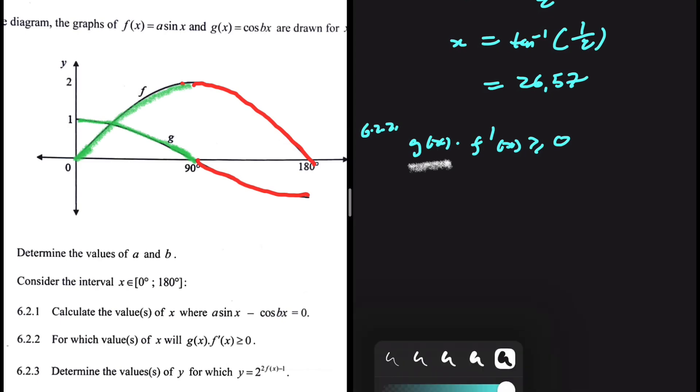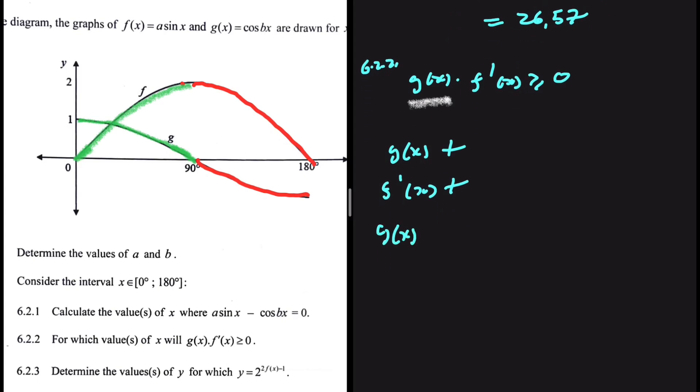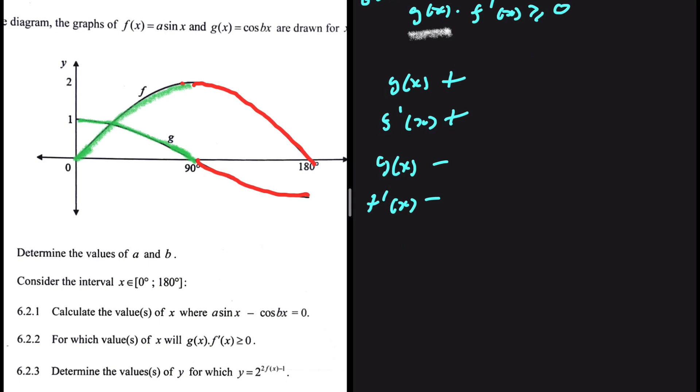So as you can see, when g of x is positive, f prime of x is also positive. The product of those two graphs will be positive. And when g of x is negative, the gradient of f of x is also negative. Negative multiplied by negative is positive. So it seems like when x is an element of 0 to 180 degrees, our condition is satisfied. G of x multiplied by the gradient of f of x is greater than or equal to 0.